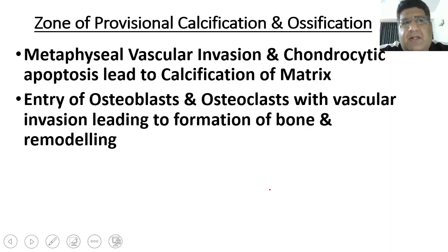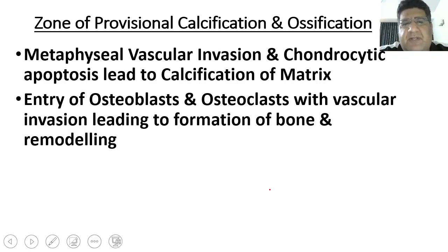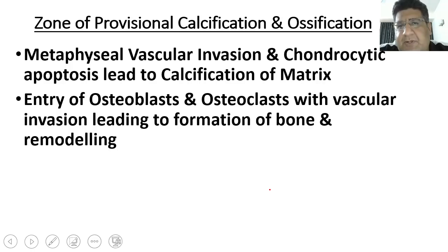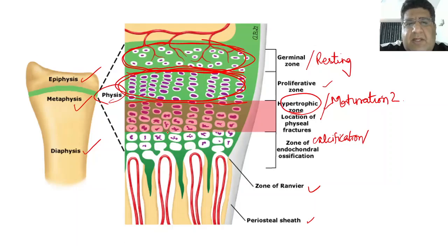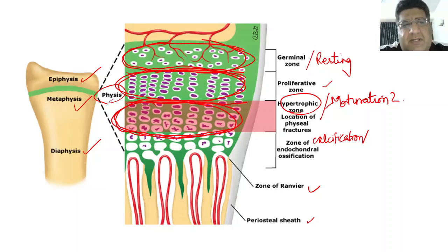In the zone of provisional calcification, the chondrocytes that are already there start going into apoptosis — they lead their own death. Because of this chondrocytic apoptosis, a lot of metaphysial vessels creep into that area, and you see calcification of the extracellular matrix. Then osteoblasts and osteoclasts enter with vascular invasion — they make bone, do remodeling, and complete the process. The chondrocytes have become five times their original size but there is less extracellular matrix, making this the weakest zone and a common site for physeal trauma.